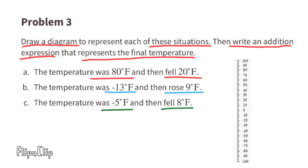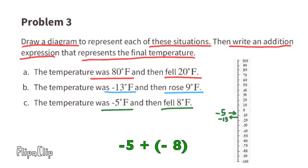Part c: the temperature was negative 5 degrees Fahrenheit and then fell 8 degrees Fahrenheit. 'Fell' means it went lower or dropped, so that means minus. We started with negative 5 and took away another 8. Since we need to write an addition expression, we write negative 5 plus negative 8.